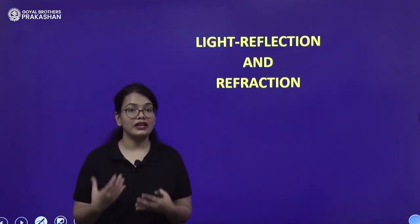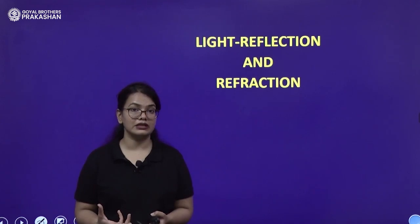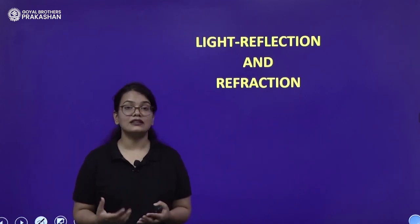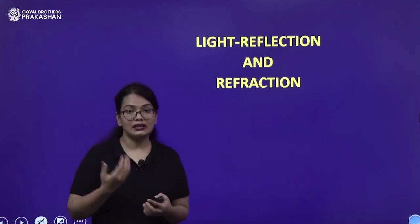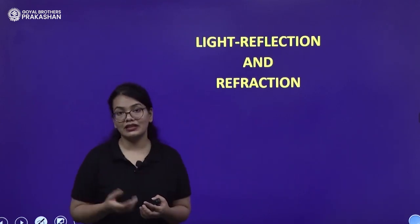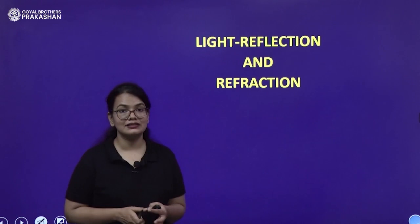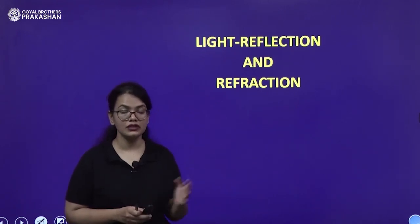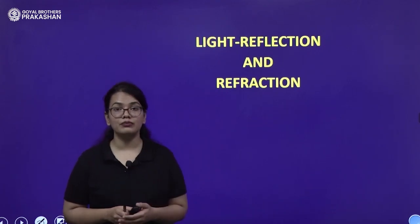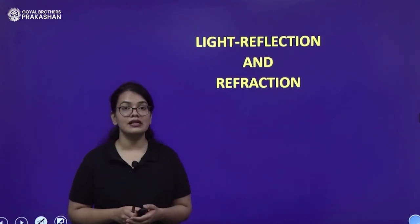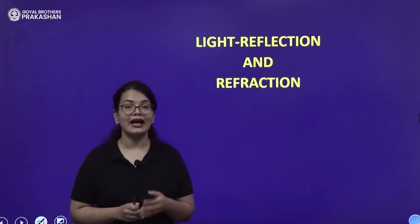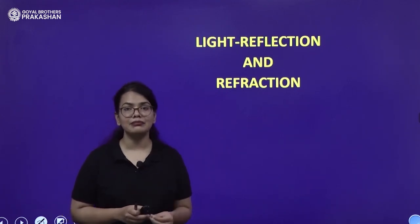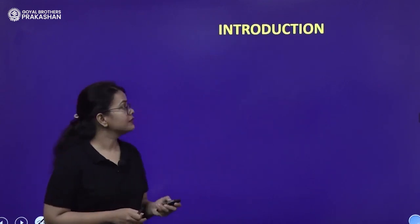We will understand how light enables us to see objects. There are various phenomena that light undergoes, and two of them are discussed in very great detail in this chapter. One is reflection, the other is refraction. We will discuss in detail about both of these phenomena and the laws related to them, along with common examples that we observe in our daily life.